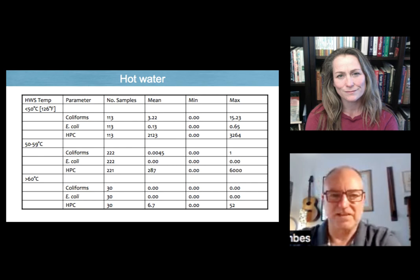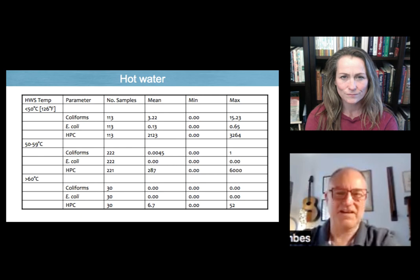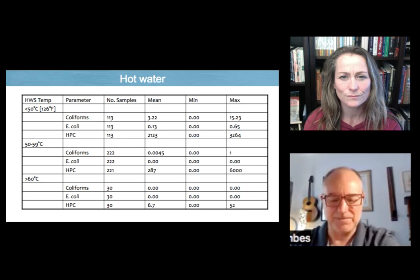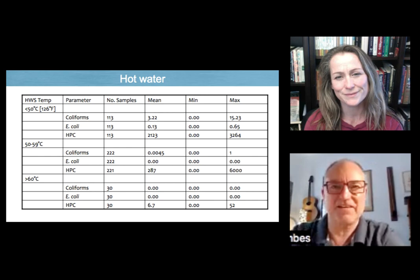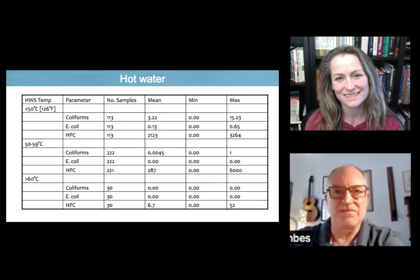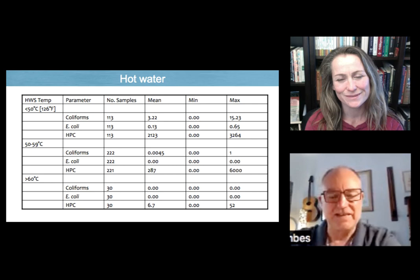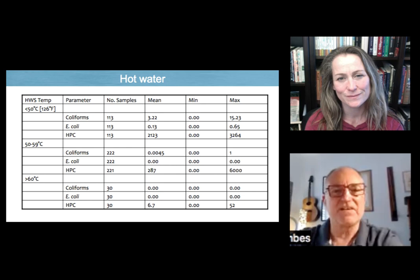There's other work where we actually looked at pathogens directly from Legionella all the way through to Salmonella and the standard ones. And the more pathogenic the bacteria, the more fragile it was. For example, Legionella was killed very rapidly from very small changes of temperature, not absolute temperatures. And Salmonella and other bacteria pathogens were very, very heat sensitive at low temperatures.